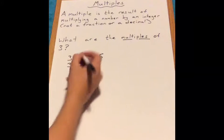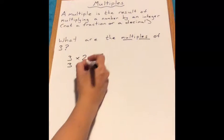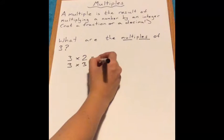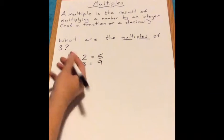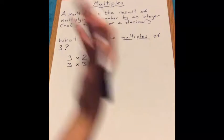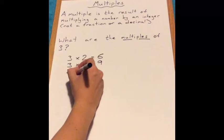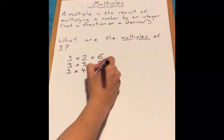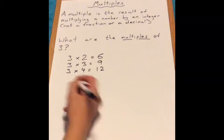We'll do 3 times 3 which equals 9. 9 is a multiple of 3. So let's keep going. You'll notice that we're just going to use what we already know, which is the 3 times table. So 3 times 4 gives us 12, another multiple of 3.